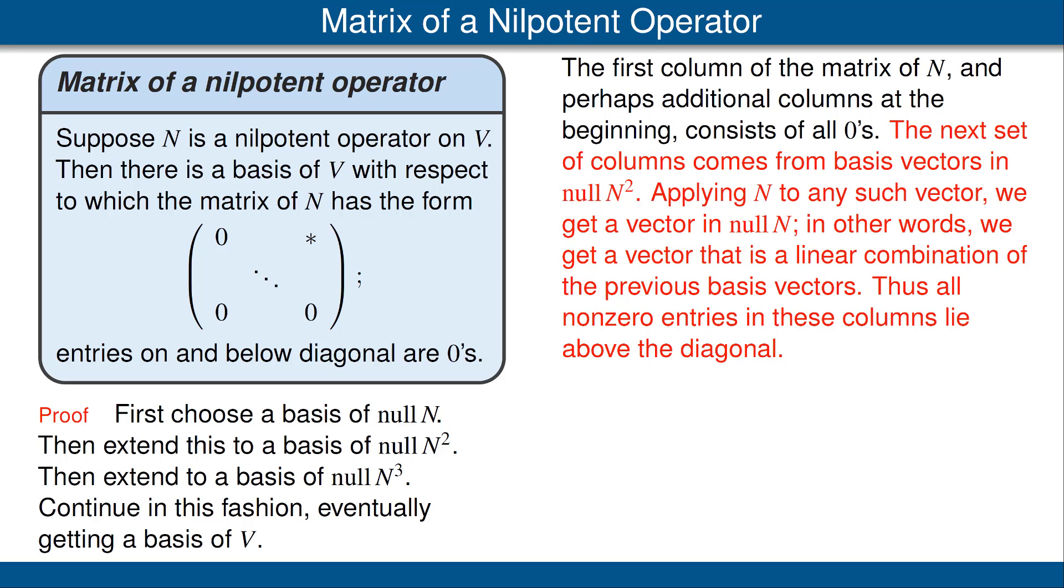Thus we get a vector that's a linear combination of the previous basis vectors. That means that all the nonzero entries in these columns corresponding to basis vectors in the null space of N squared lie above the diagonal.